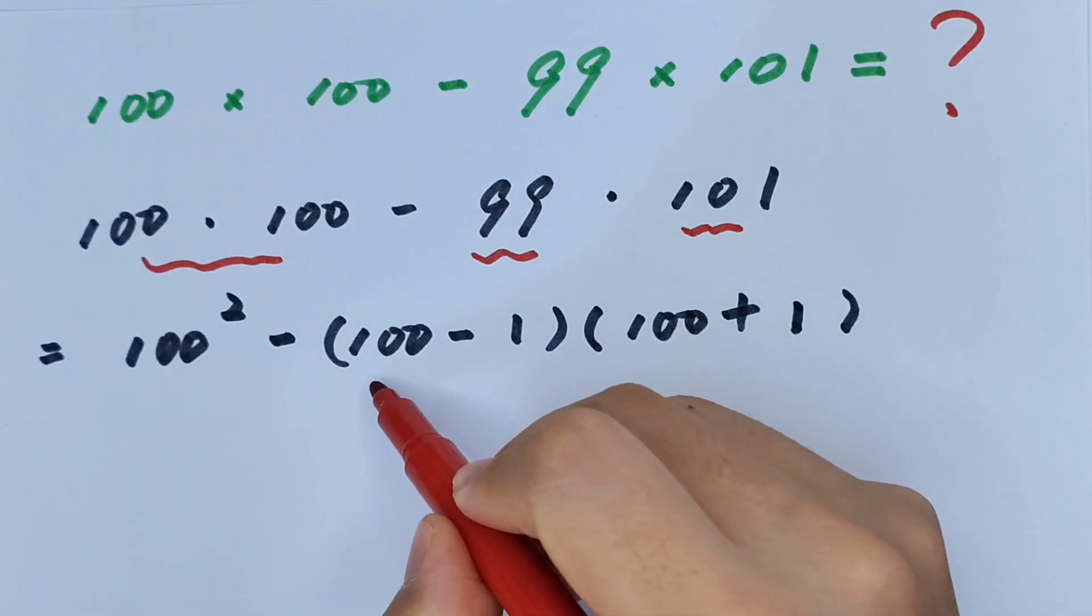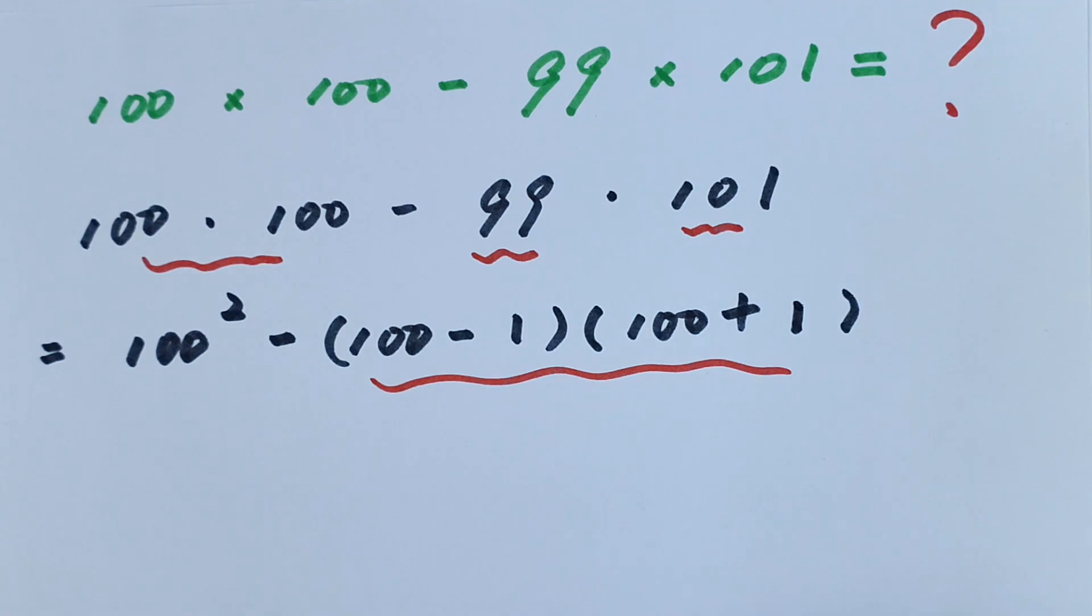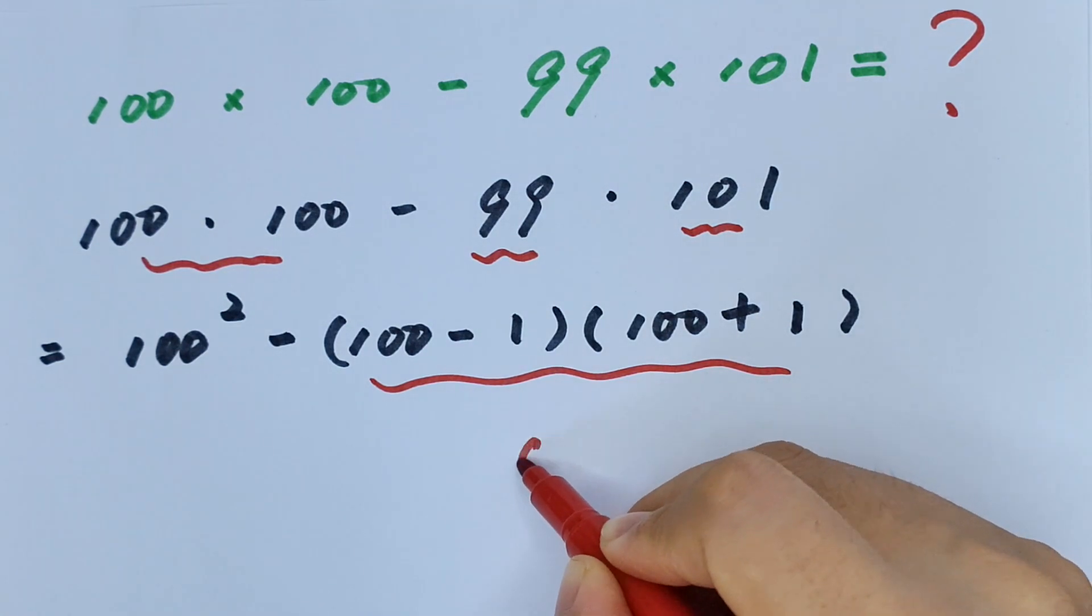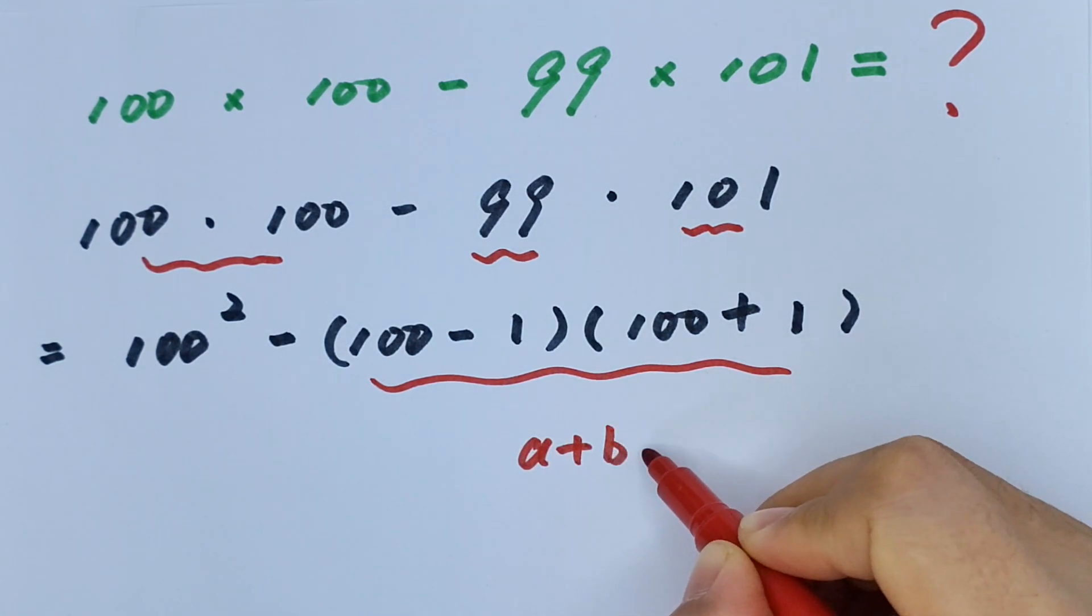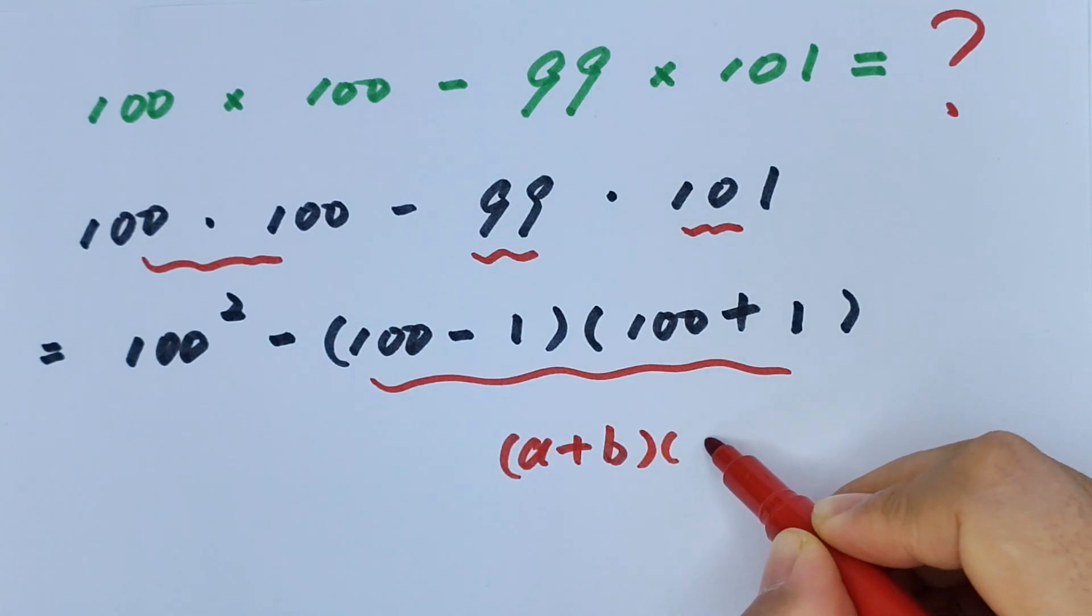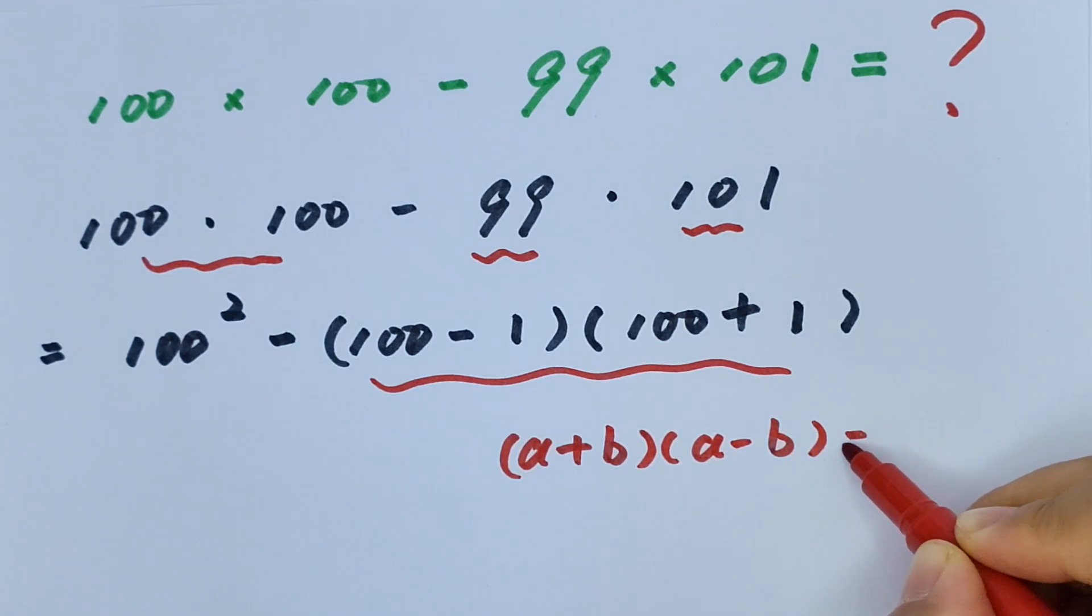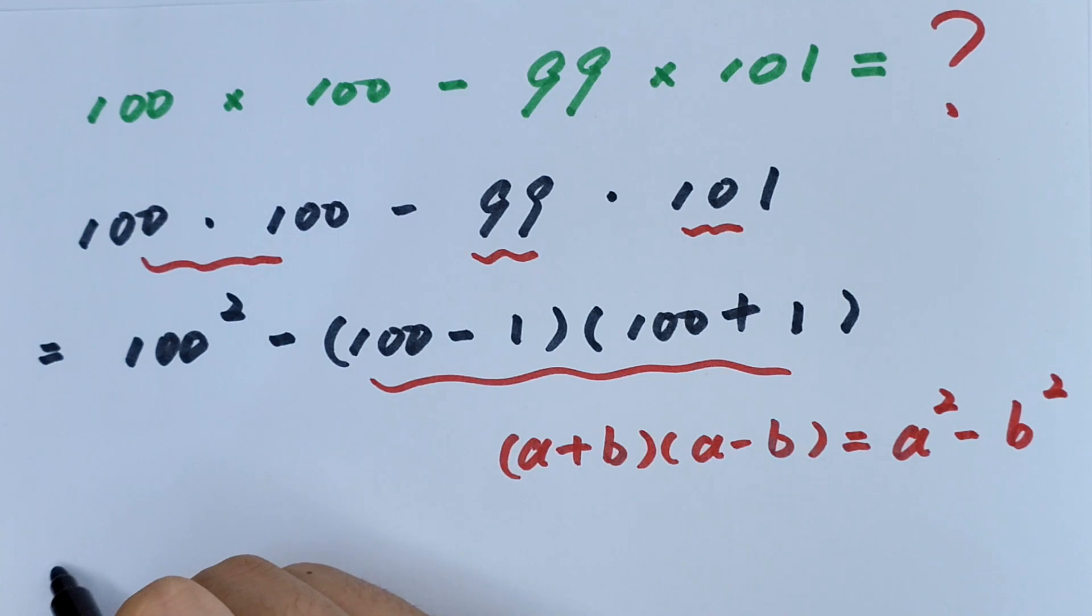Now in this part, we'll apply the formula that A plus B times A minus B equals A squared minus B squared.